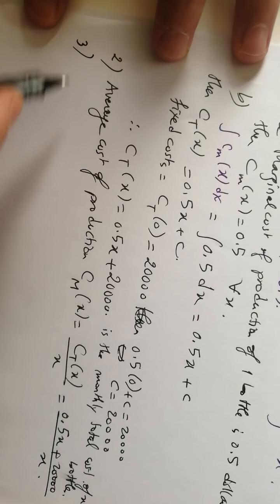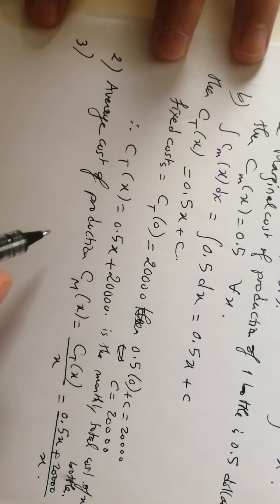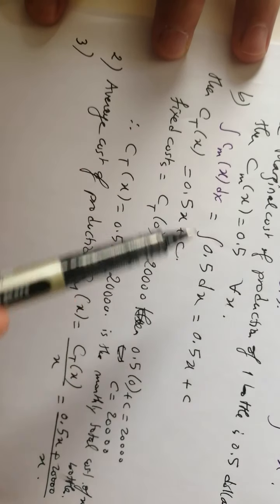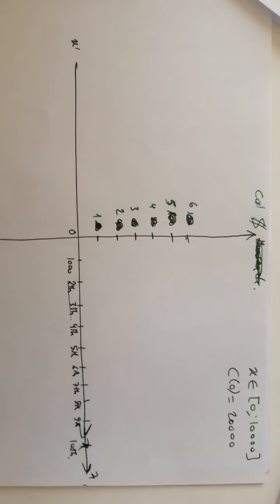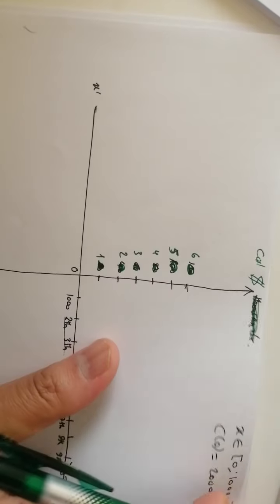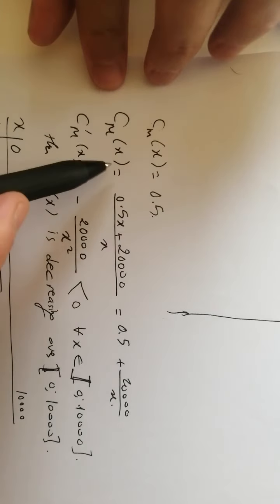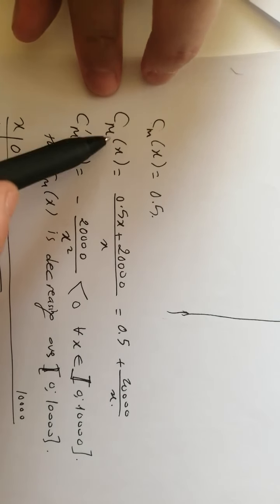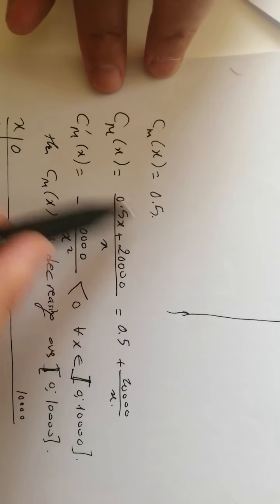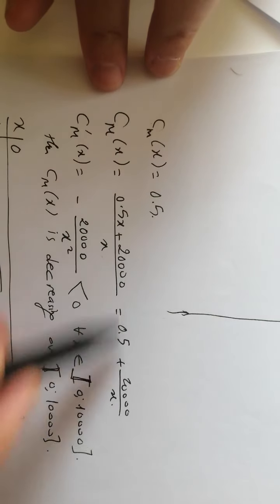Part 3: Represent in the same system the functions c small m and c capital M. We need to plot both the marginal cost CM of x, which is 0.5, and the average cost capital M of x on the same graph. This one we saw before.